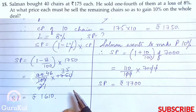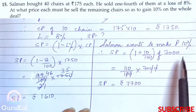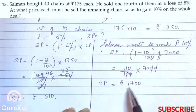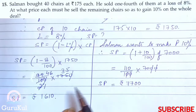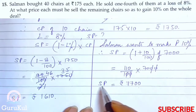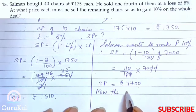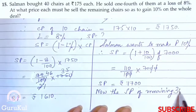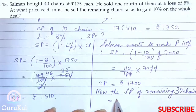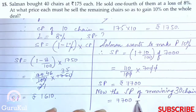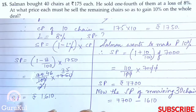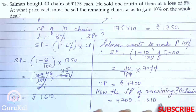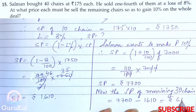Salman invested Rs. 7,000 and after making a loss of 8% on 10 chairs, he wants to make an overall profit of 10%. So the SP of the remaining 30 chairs = Total required SP − SP of 10 chairs = 7,700 − 1,610 = Rs. 6,090.